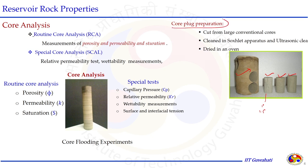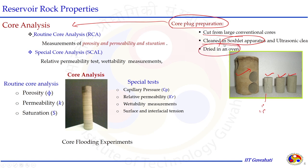Core plug preparation needs to be done before the cores are subjected for analysis. They need to be cut from the large rock and cleaned in a Soxhlet apparatus or ultrasonic cleaning to remove whatever fluid is present — making the core as clean as possible, containing only rock. The hydrocarbon fluid and water are taken out, then the solvent is removed by drying the sample in an oven, after which the core sample is ready for different core analyses.